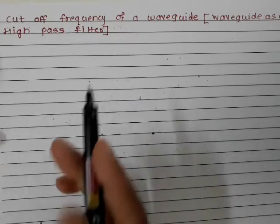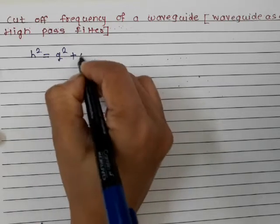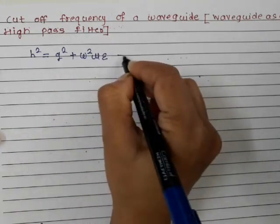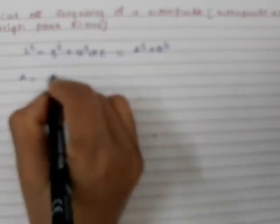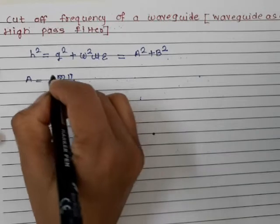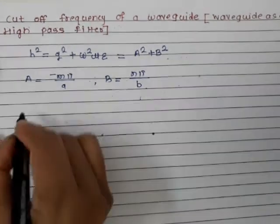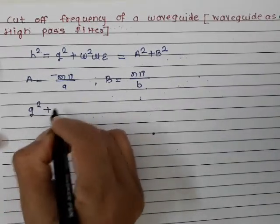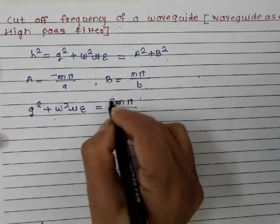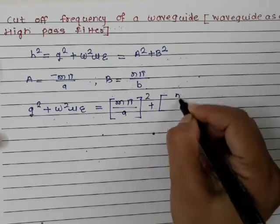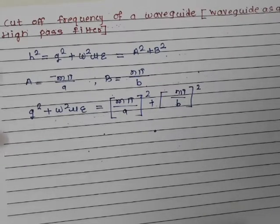Previously we have seen that h² = γ² + ω²με, which equals a² + b², where a is nothing but mπ/a and b is nothing but nπ/b. So if I put all these values, I can say γ² + ω²με is nothing but (mπ/a)² + (nπ/b)².